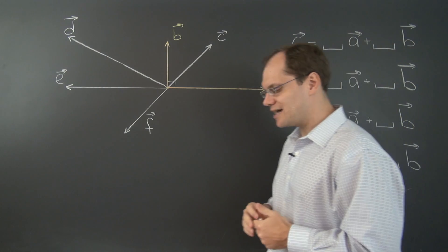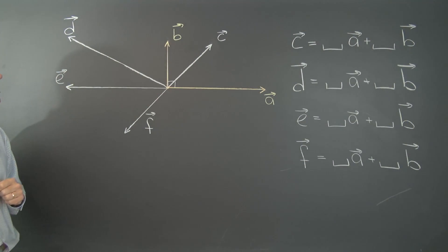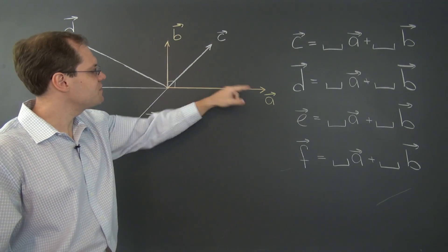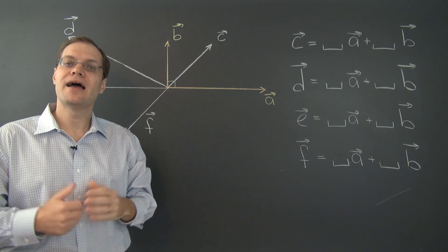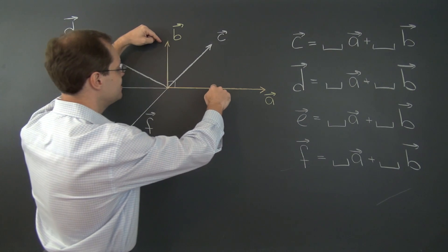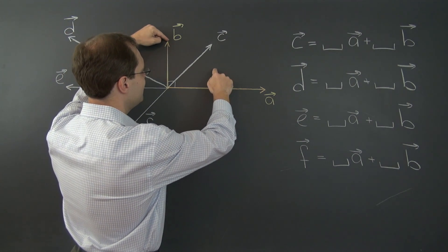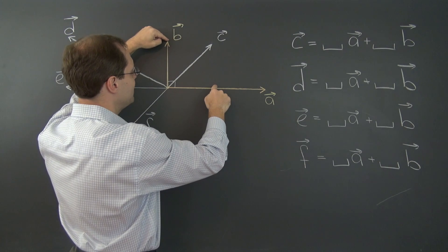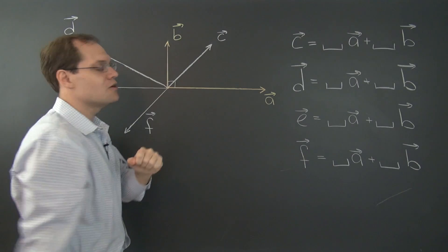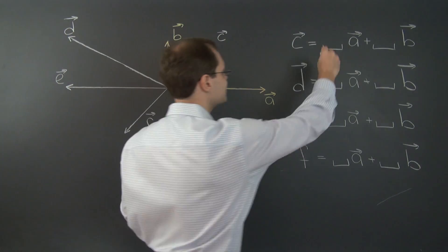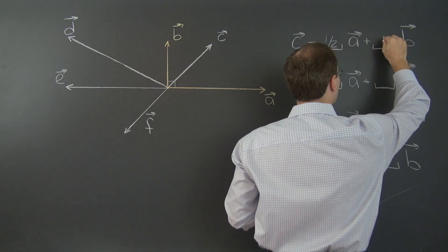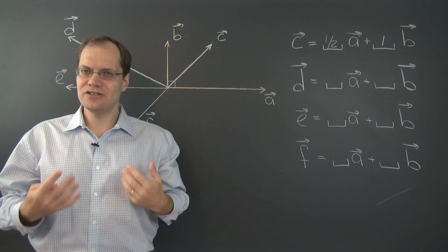Let's turn to our first task. I'll step over here and partially out of the shot, and let's decompose vector C in terms of vectors A and B. It is easy to see that we need half of A and one of B — half of A plus one of B equals C. Let me write these numbers in: half of A and one of B.